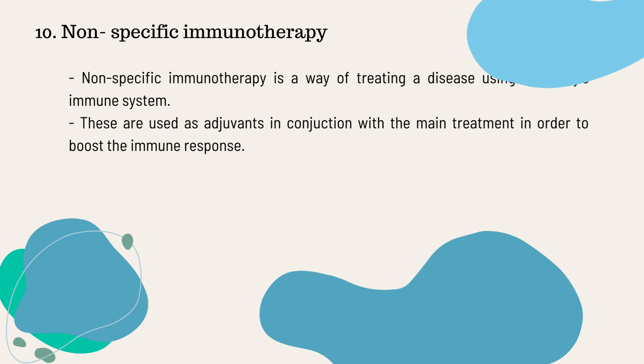The tenth type of vaccination is non-specific immunotherapy. Non-specific immunotherapy is a way of treating the disease using its own immune system. These are used as adjuvants in conjunction with the main treatment in order to boost the immune response.